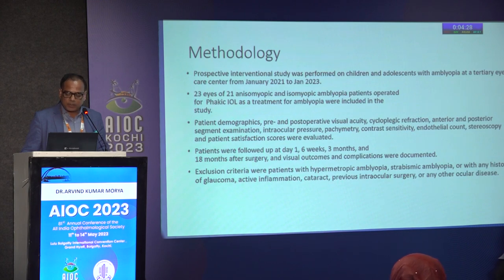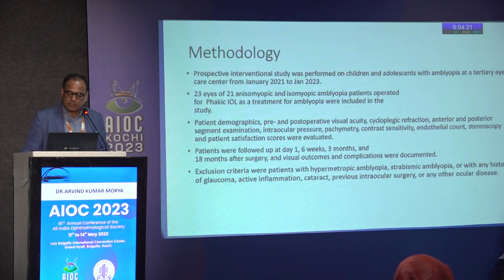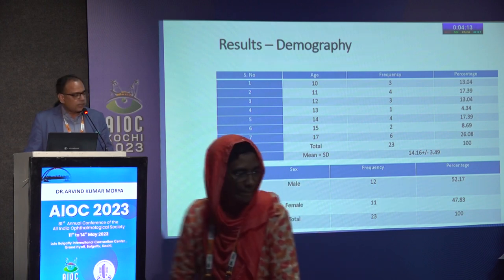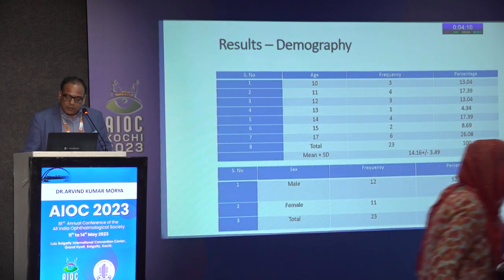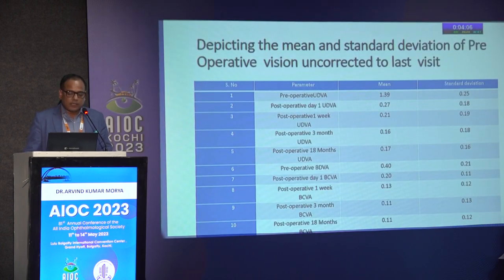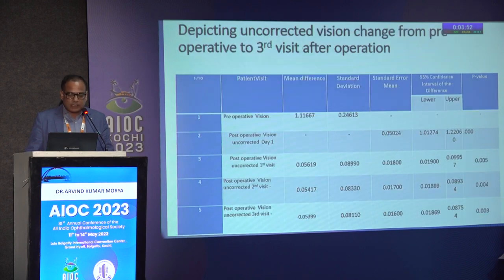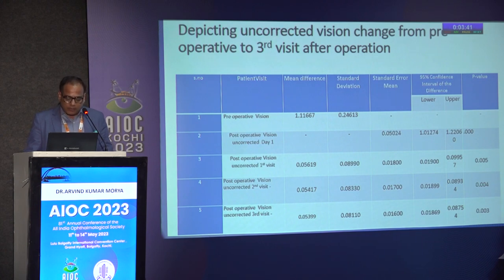Exclusion criteria included patients with hypermetropic amblyopia, strabismic amblyopia, or history of glaucoma, active inflammation, cataract, previous intraocular surgery, or any other ocular disease. The mean age was 14.16 ± 3.49 years with 12 males and 11 females. Uncorrected vision improved from logMAR 1.39 to 0.11 at 18 months. The mean difference in uncorrected vision from 1.11 went down to 0.05 at the last visit with a significant p-value of 0.003.